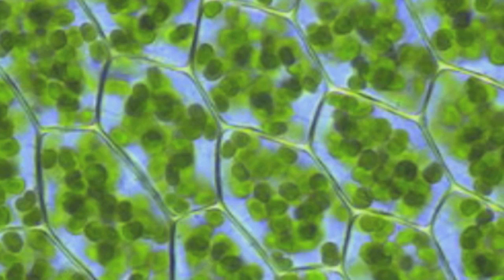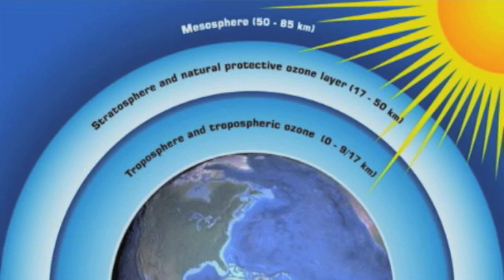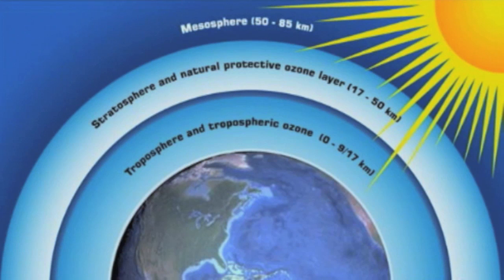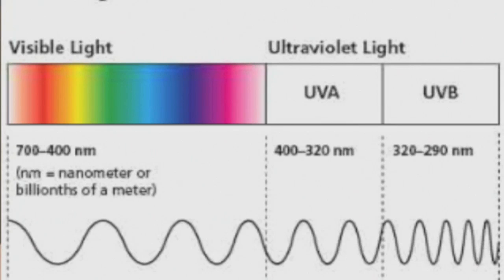Between 2.3 and 2.4 billion years ago, the oxygen concentration in the ocean was high enough that it started to escape and accumulate in the atmosphere, where it formed ozone, blocking much of the UV radiation from reaching the Earth's surface.